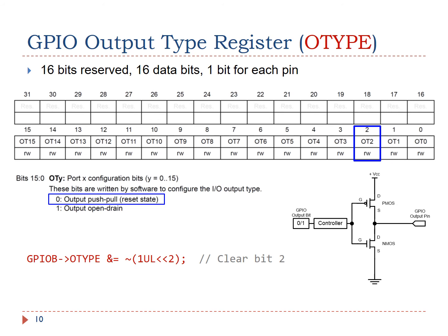Next, we need to set the output mode of pin 2 as push-pull, instead of open-drain. Therefore, software has to clear bit 2 of the output type register. In the following few slides, I will explain what is the difference between push-pull and open-drain.